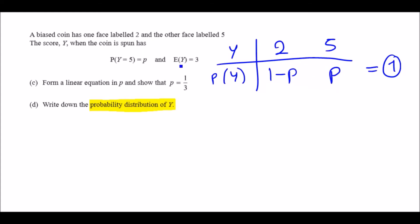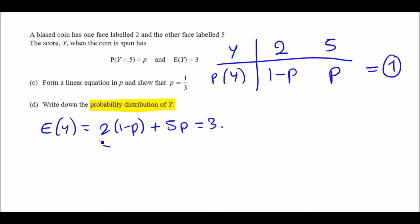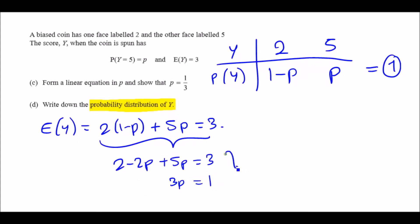Since E[Y] = 3, we set up the equation: 2 times (1 minus p) plus 5 times p equals 3. Expanding the bracket: 2 minus 2p plus 5p equals 3, so 3p equals 1, giving p equals 1/3. Updating the probability distribution: P(Y=5) = 1/3 and P(Y=2) = 2/3, because the total must give you 1.